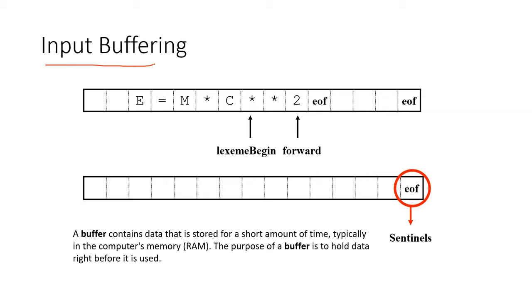This technique is known as buffering, and for compilers, the lexical analyzer uses this input buffering to check the stream of characters in the source code using the buffering method.